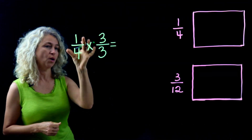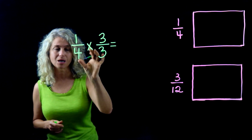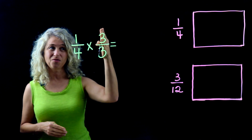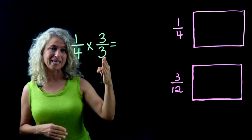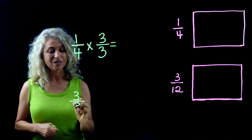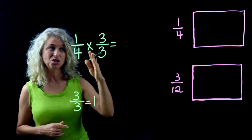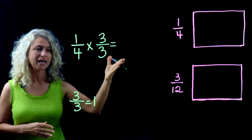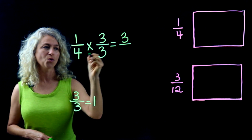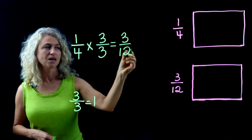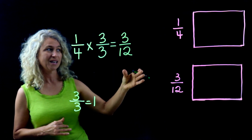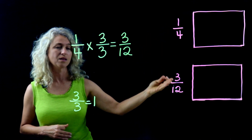For the next example, we look at 1/4 and multiply it by something that means the whole number 1. Remember, if you have the same number on top as on the bottom — like 3 divided by 3 — that means 1. So we multiply by 3/3: 1 times 3 is 3, and 4 times 3 is 12, giving us 3/12 as an equivalent fraction.